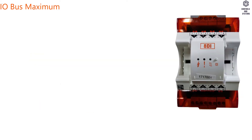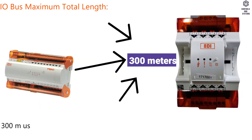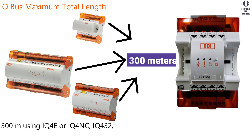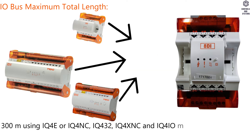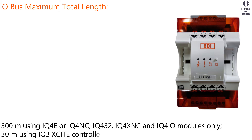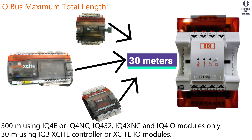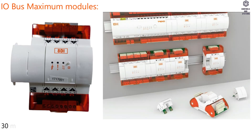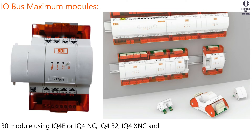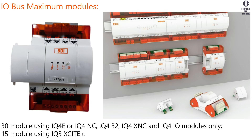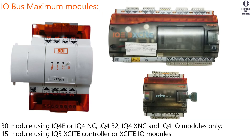I/O bus maximum total length: 300 meters using IQ4E or IQ4IO modules only; 30 meters using an IQ3XSite controller or XSite I/O modules. I/O bus maximum modules: 30 modules using IQ4E, IQ4NC, IQ432, IQ4XNC, and IQ4IO modules only; 15 modules using an IQ3XSite controller or XSite I/O modules.